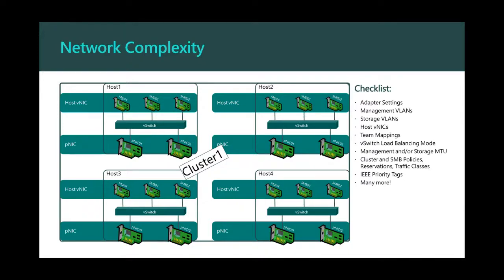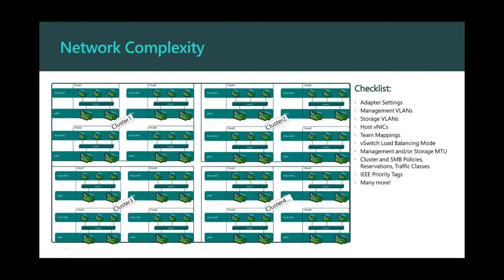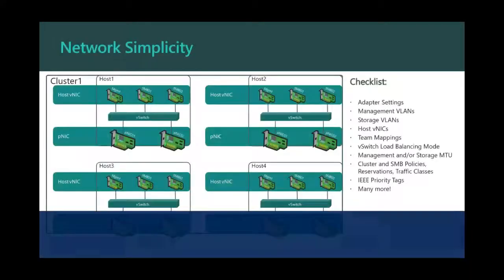If you think about that network complexity — we've got four nodes here, and it was hard enough just to get one node correct. Now we've got four nodes, and that's very difficult to get exactly the same. Maybe you want to deploy more than one cluster — this just becomes a compounding issue. Many of you will say, 'Dan, I don't need this, I have this all scripted.' Well, I work with world-class developers and they have bugs — I'm quite certain your script has a bug as well. Instead, there's a better way, and that's where Network ATC comes in.